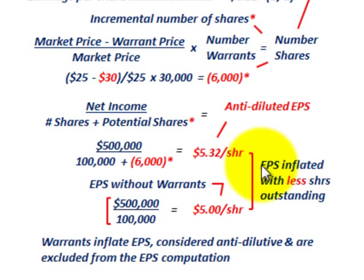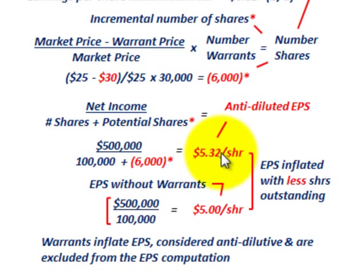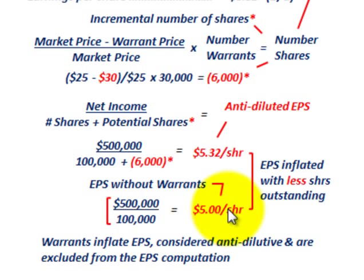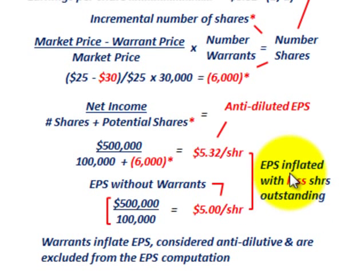This same logic applies to stock options as well — options and warrants work the same way. In our example we went through warrants, but just remember: if you inflate the earnings per share when you include the warrants or stock options that would be exercised compared to what it would be without including them, then you can't include them in your earnings per share when calculating it for your financial reporting at the end of the year.